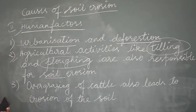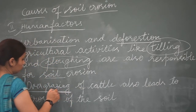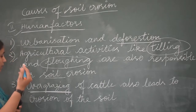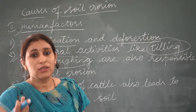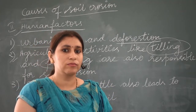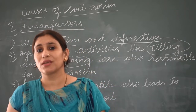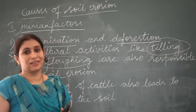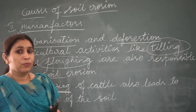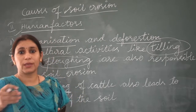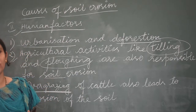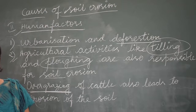Next, we talk about overgrazing. What does overgrazing mean? What does grazing mean? The herbivore animals that eat grass or different plants — we call it grazing. The grass-eating animals generally graze; they eat grass. The cattle, as you can see, we call it grazing.